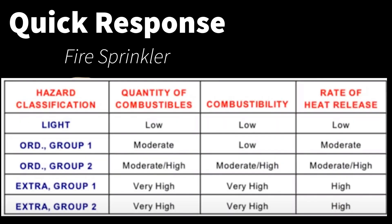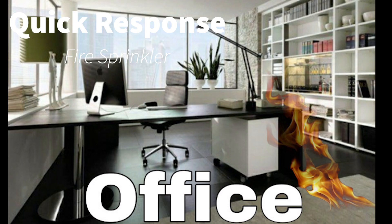Now let's look at how the different response times are applied, starting with the quick response. On this chart you will see the hazard classifications on the left. Light hazard occupancy shows low combustible loads and rate of heat release. All light hazard occupancies will use quick response fire sprinklers — the earlier the water is applied, the faster the fire is controlled with the operation of fewer sprinklers. Examples of light hazard occupancies are an office and a school.